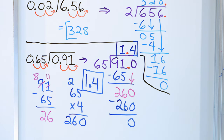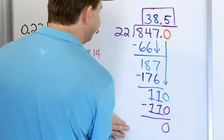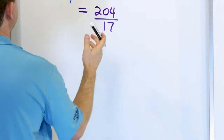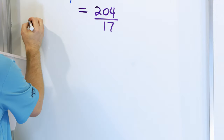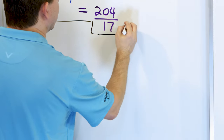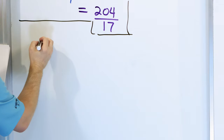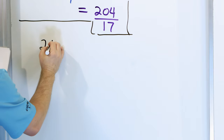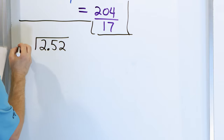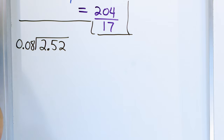Alright, I think we have room for one more problem. Let's take a look at the final problem: 2.52, and we're going to divide that by 0.08.